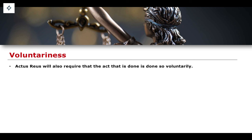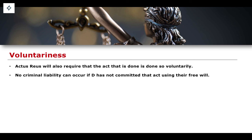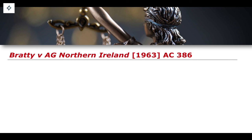When we think about Actus Reus, we consider that a person ought to have done the thing in question in a way that was voluntary. Actus Reus requires that the act is done voluntarily. This relates to the idea of voluntariness — if an individual has committed an act but not done so using their own free will and under their own physical capabilities, then no criminal liability may be able to occur.